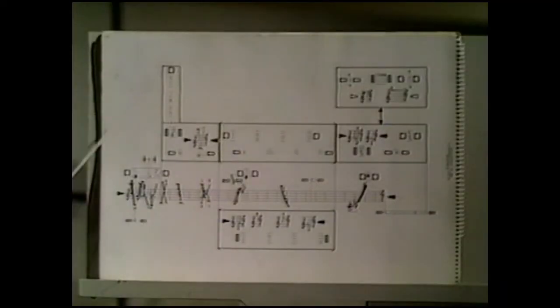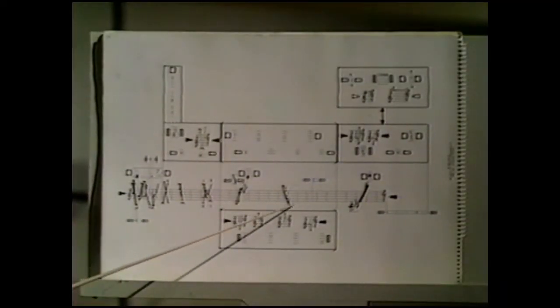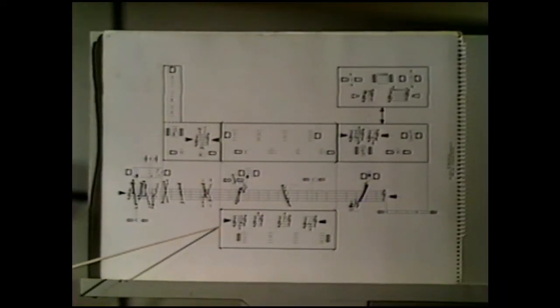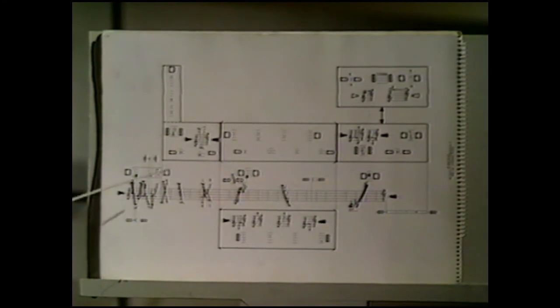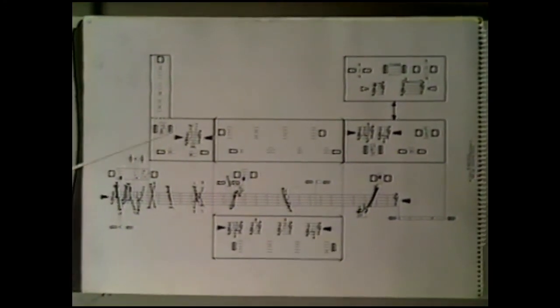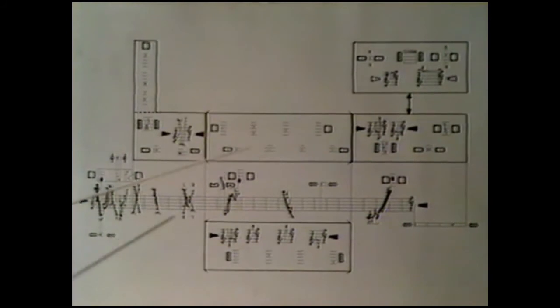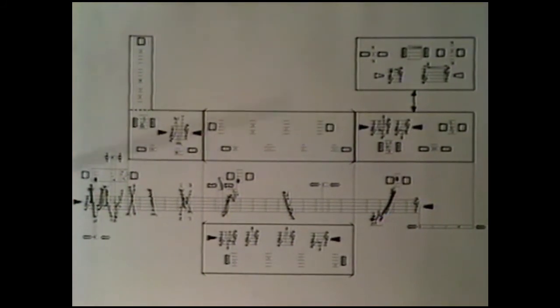Stockhausen's Zyklus, composed in 1959 for one percussion player, shows how rapidly the tendency towards freer and more improvisatory forms developed. One glance at a page of the score of Zyklus shows that an entire new notational system has been invented for this piece. It is almost a graphic or visual notation, far removed from the Beethoven and even Schoenberg examples of our earlier programs.